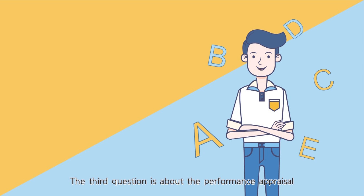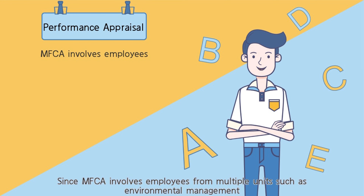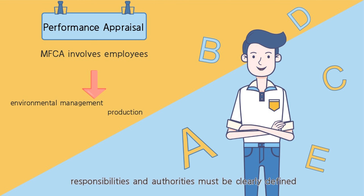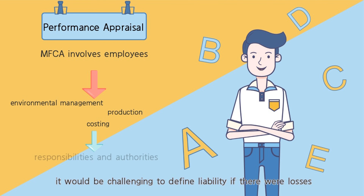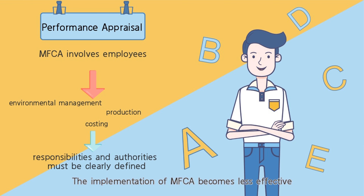The third problem is performance appraisal. Since MFCA involves employees from multiple units such as environmental management, production, engineering, and costing, responsibilities and authorities must be clearly defined. Without these clear boundaries, it would be challenging to define liability if there were losses, making the implementation of MFCA less effective.